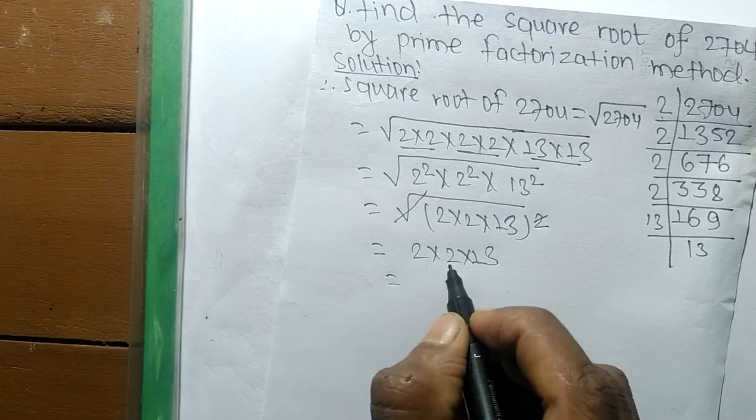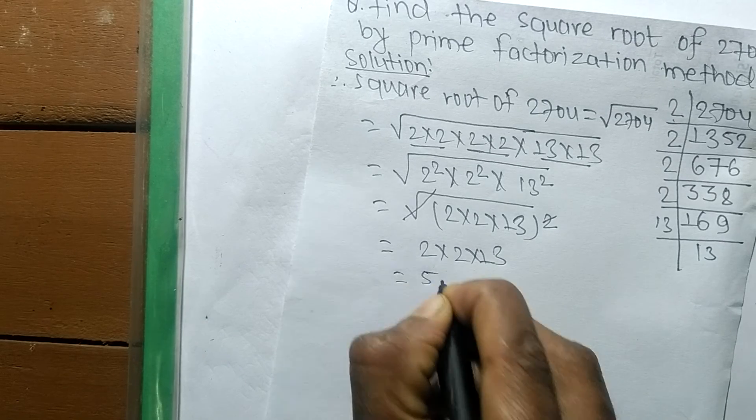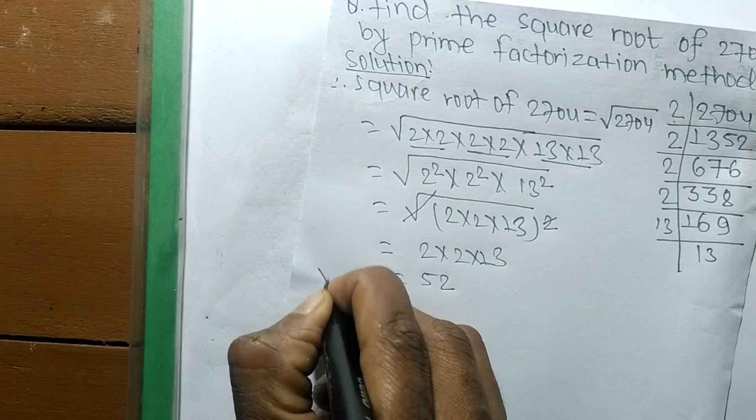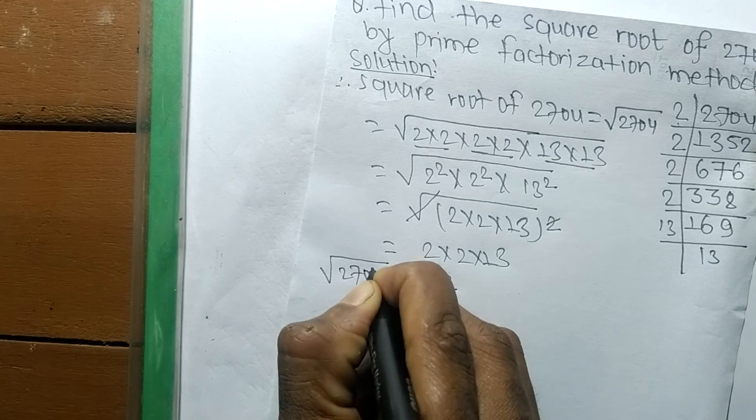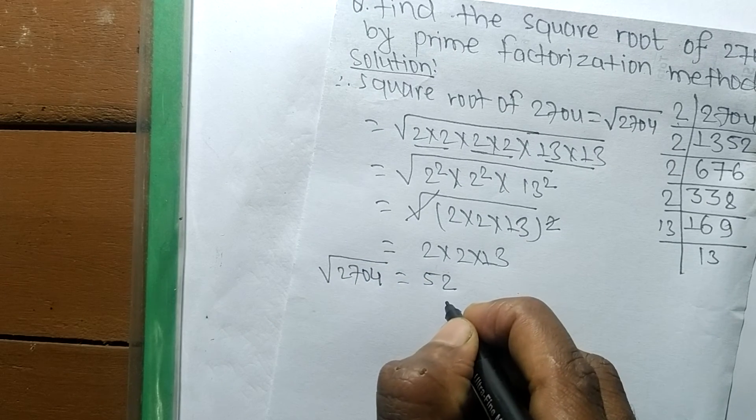The product of these numbers is 2 times 2 which is 4, and 4 times 13 is 52. So the square root of 2704 is 52.